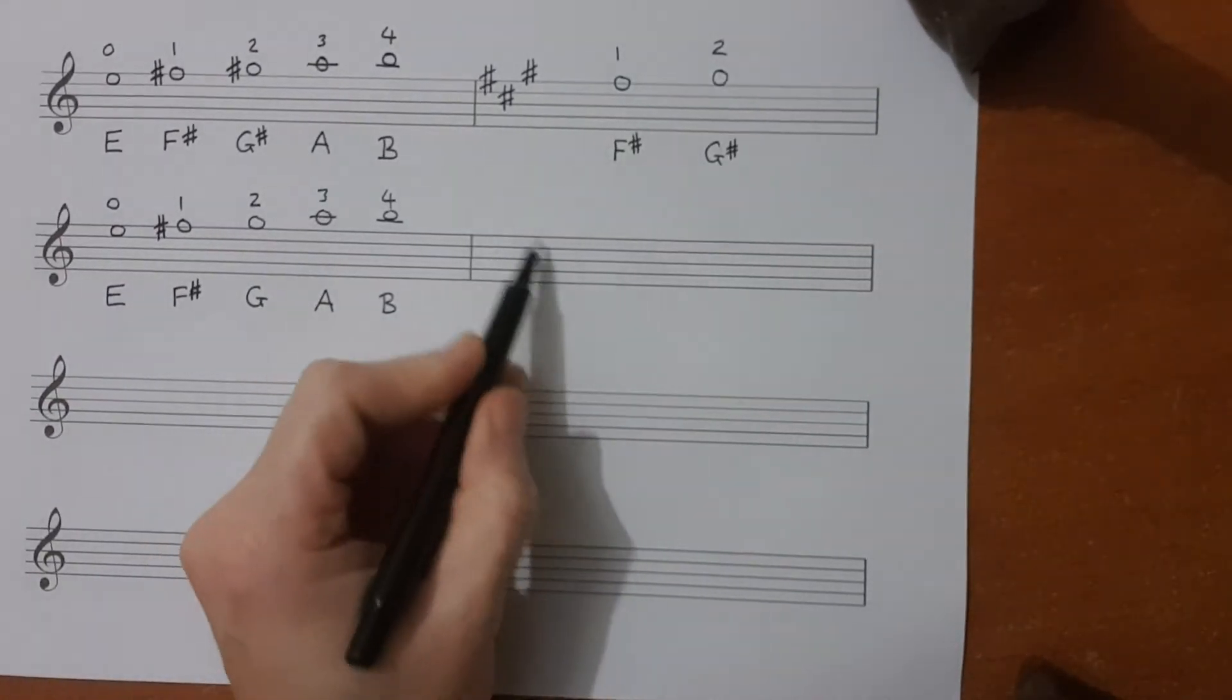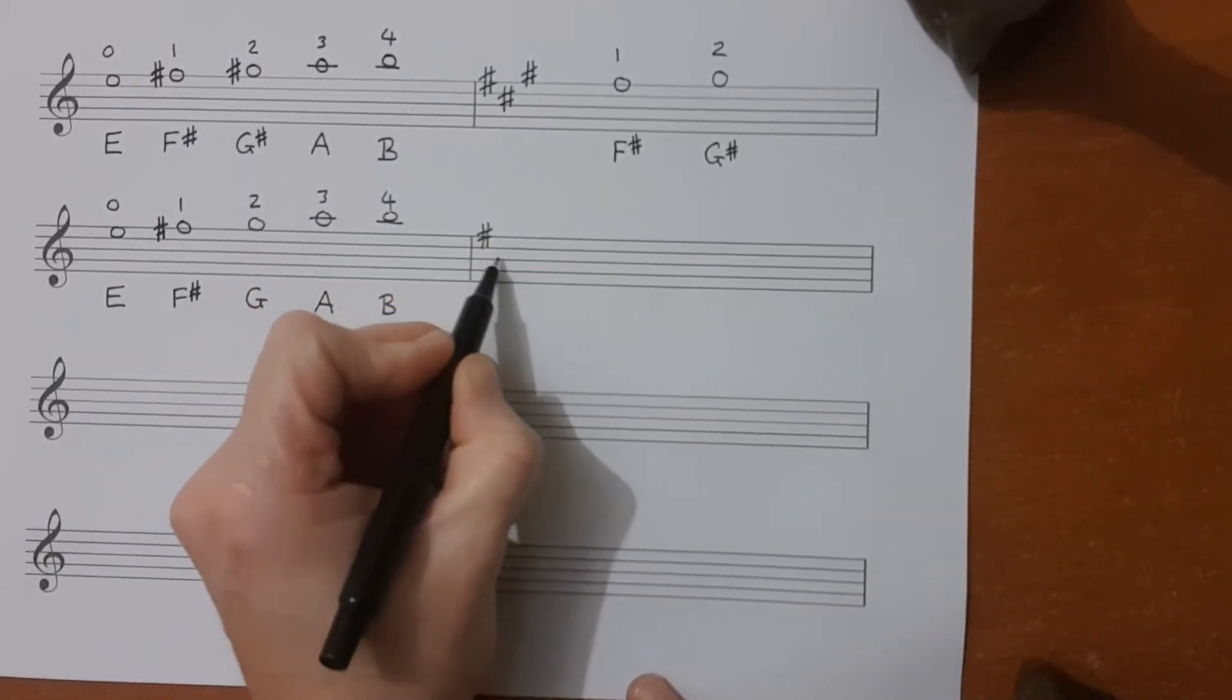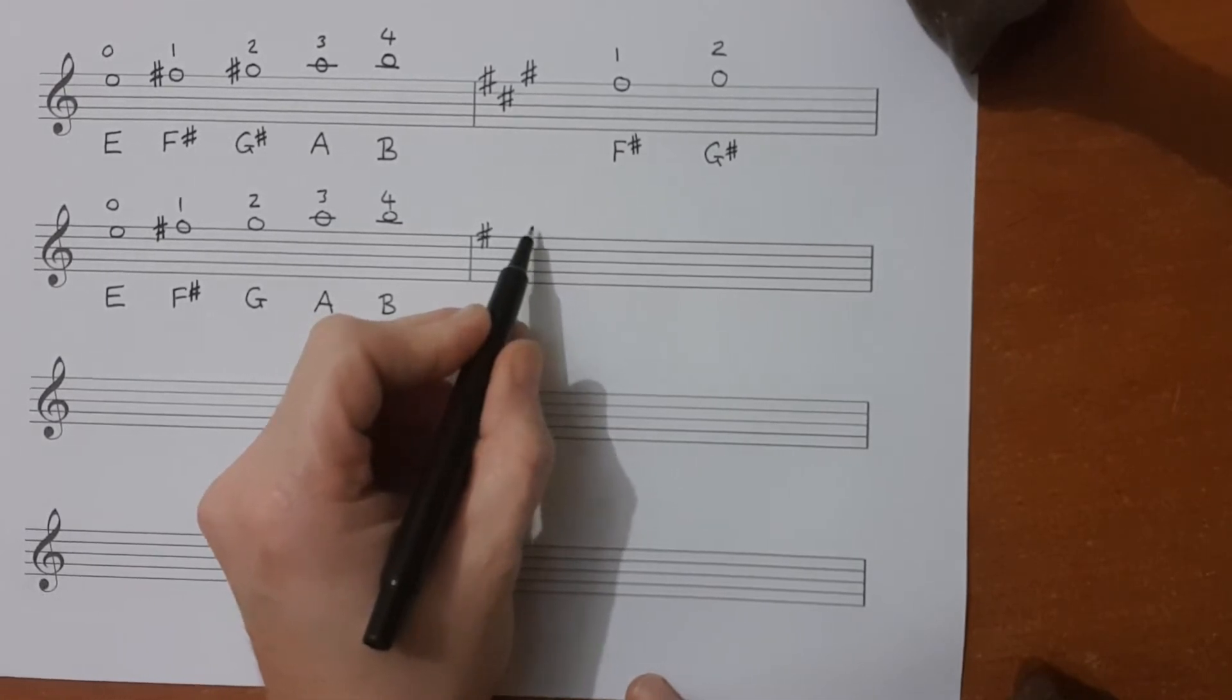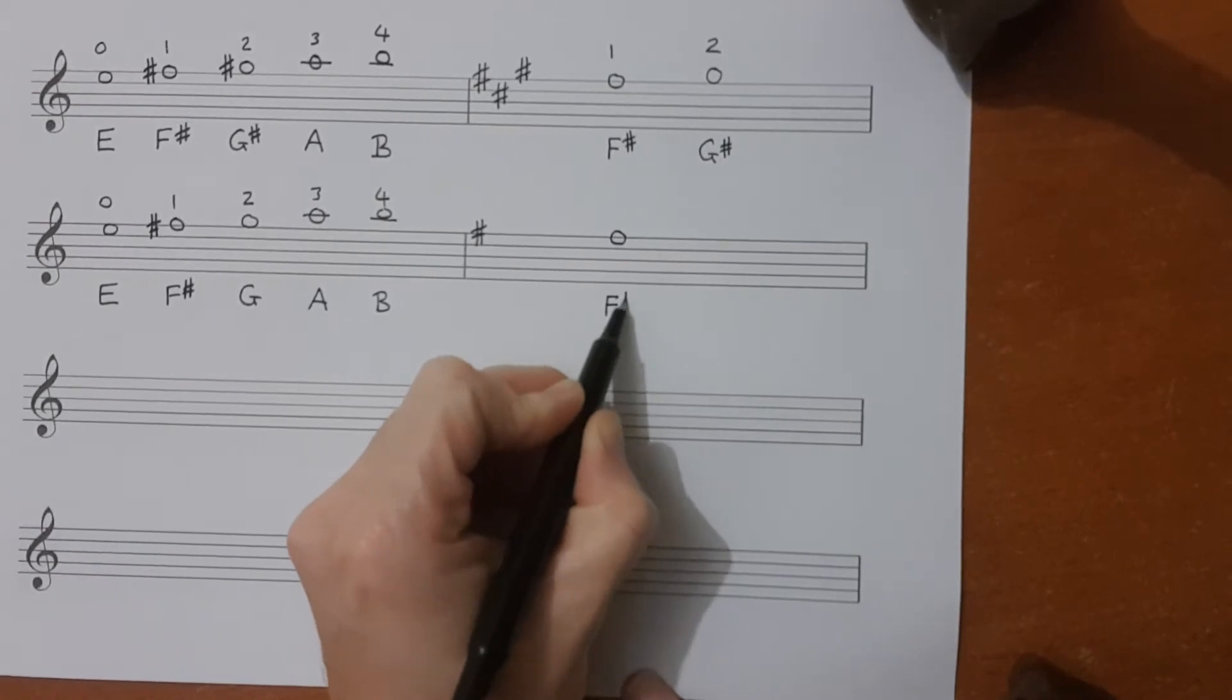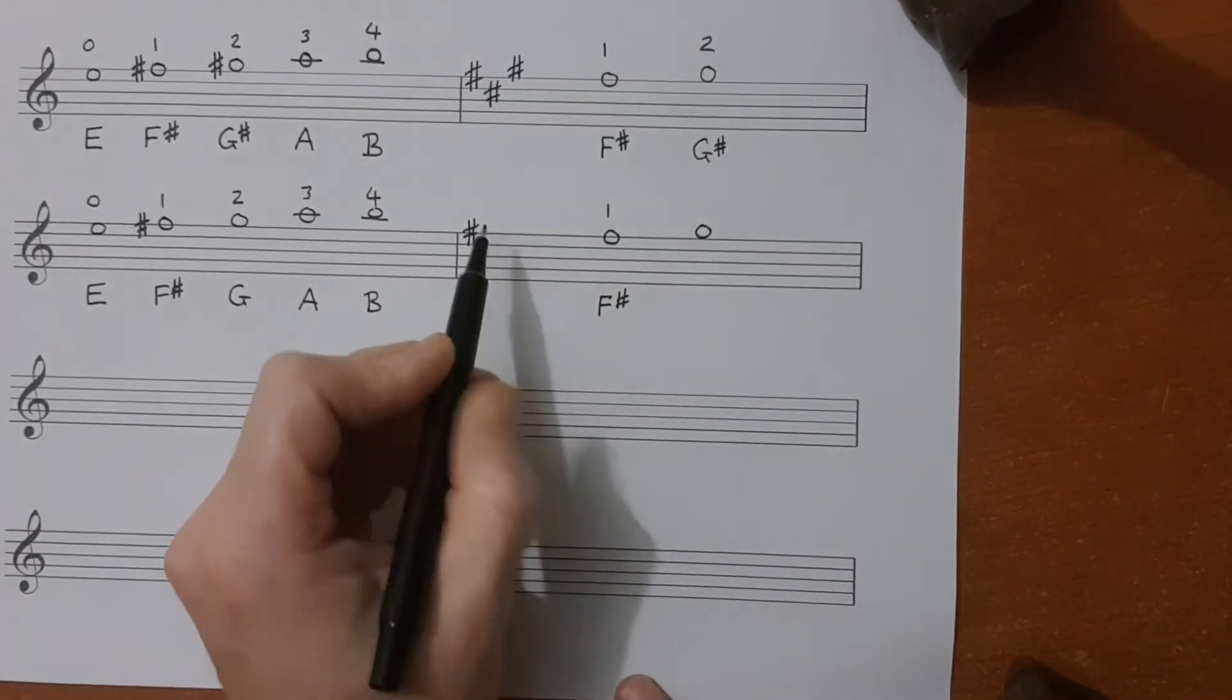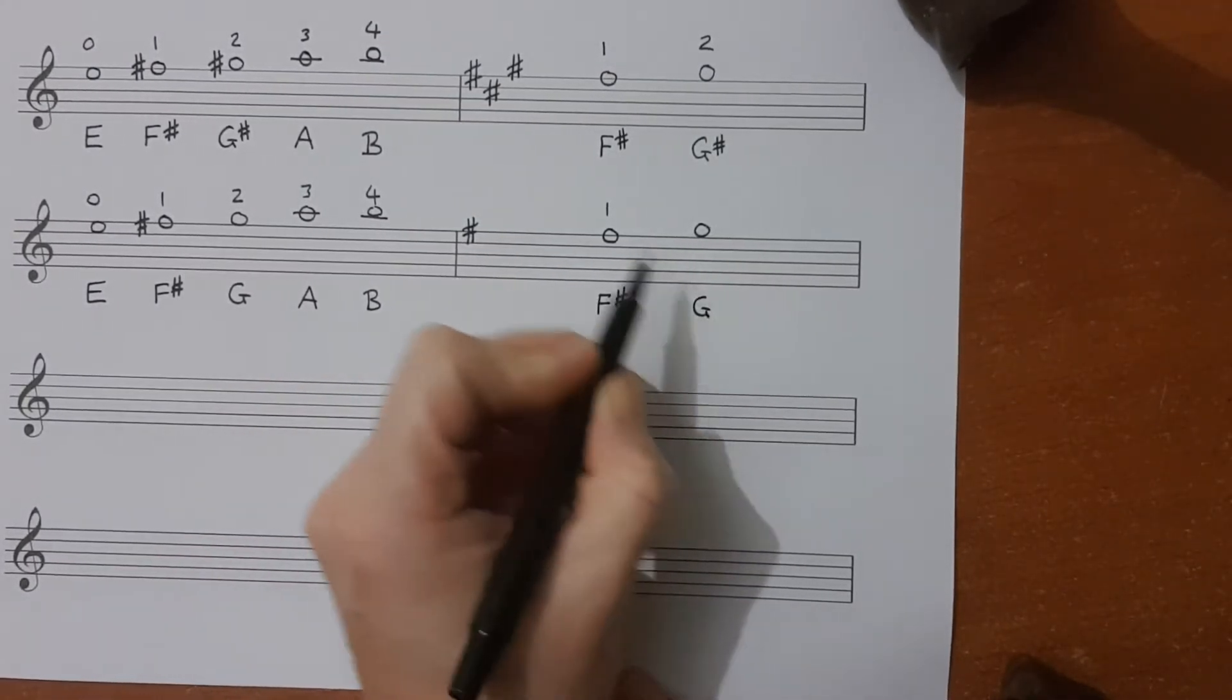So now what we would expect to see in a key signature, is we will definitely see an F sharp. We may or may not see the C sharp, but we won't see the G sharp. And that will mean that F still is played as an F sharp, but G, there's nothing in the key signature to make that G sharp. So it's just a plain G.